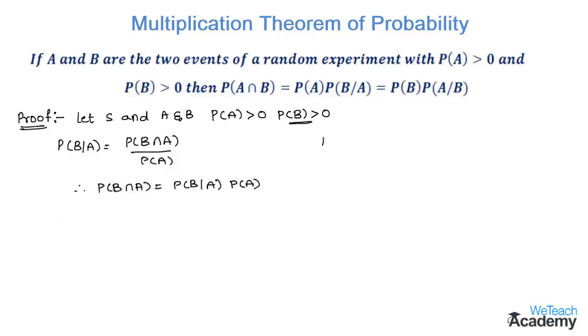Similarly, the formula for P(A by B) is given as P(A intersection B) divided by P(B). Again, by cross multiplying, we get P(A intersection B) is equal to P(A by B) into P(B).